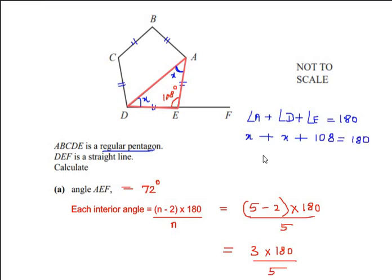So adding these two x's we get 2x = 180 - 108, which gives us an angle of 72 degrees. So x is going to be 72 degrees divided by 2, which is 36 degrees.